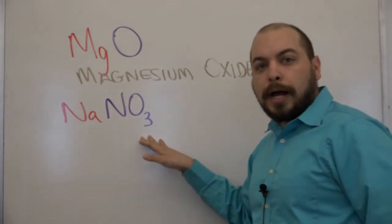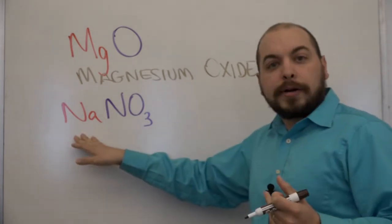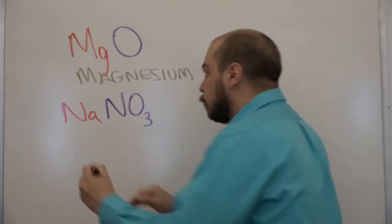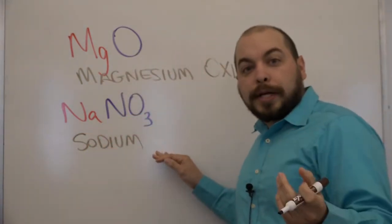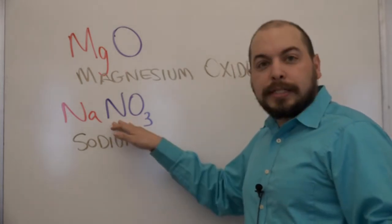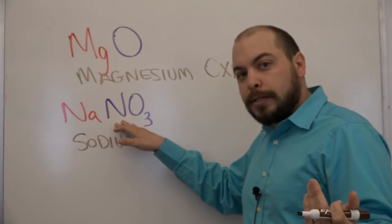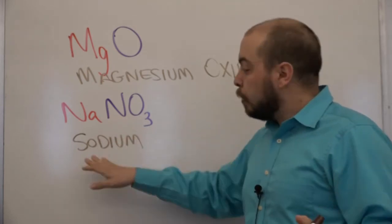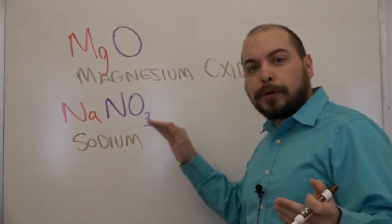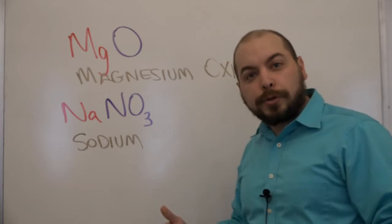For a ternary ionic compound what we're going to do is again just simply write the name of our cation in this case sodium. And this is where it gets very simple. Because this is a polyatomic ion which you should know at this point hopefully is nitrate. Nitrate is simply going to be written as is. So therefore the name of this ternary polyatomic compound is sodium nitrate.